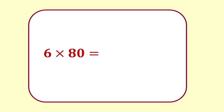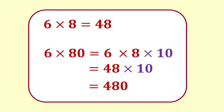6 times 80. The basic fact is that 6 times 8 equals 48. From this we can calculate 6 times 80. 80 is 8 times 10. So 6 times 80 equals 48 times 10, which equals 480.